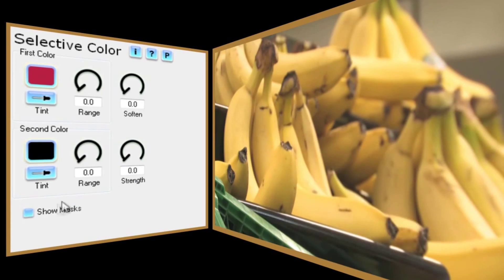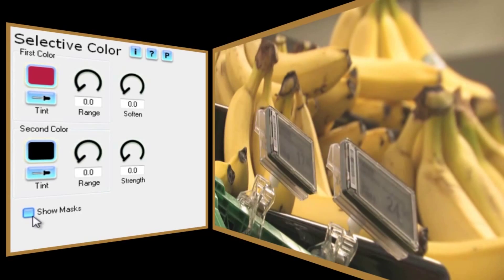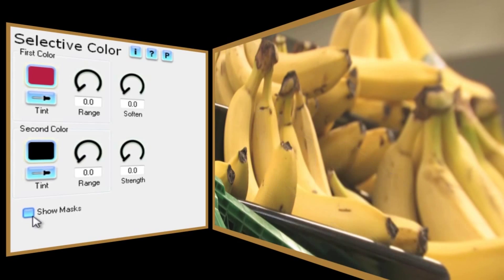Finally, the Show Masks checkbox, which lets you view the selected color mask only. That's very useful for identifying areas you may otherwise have missed.